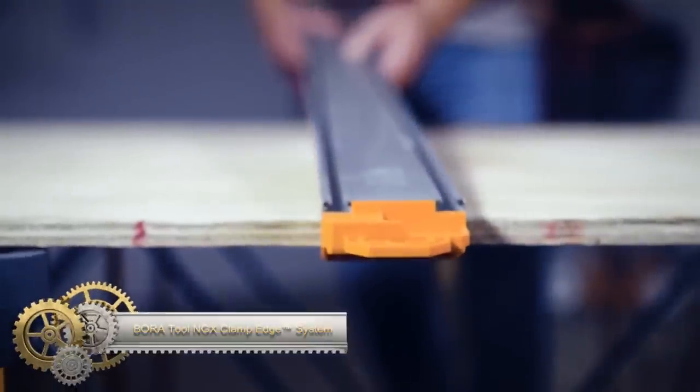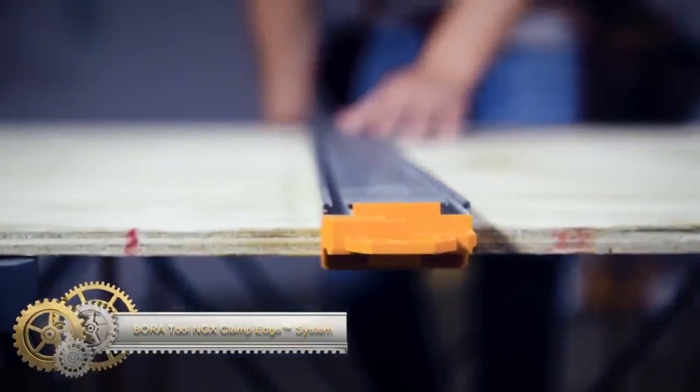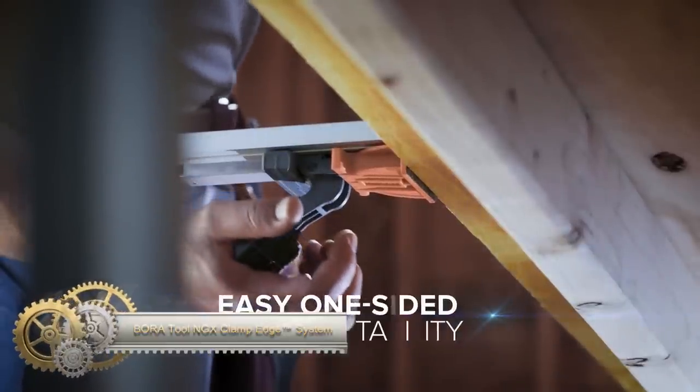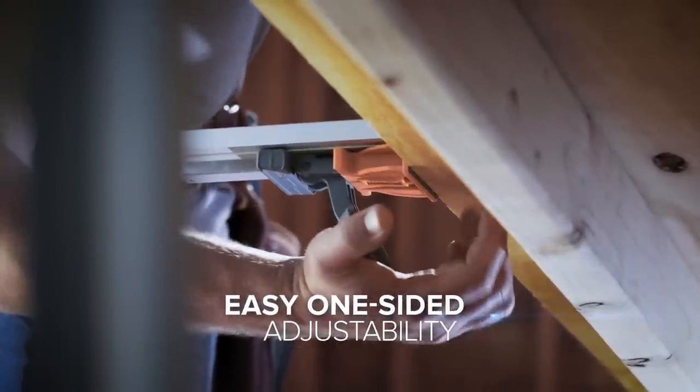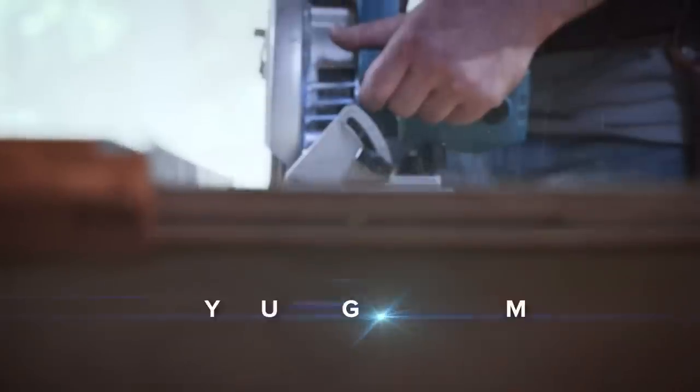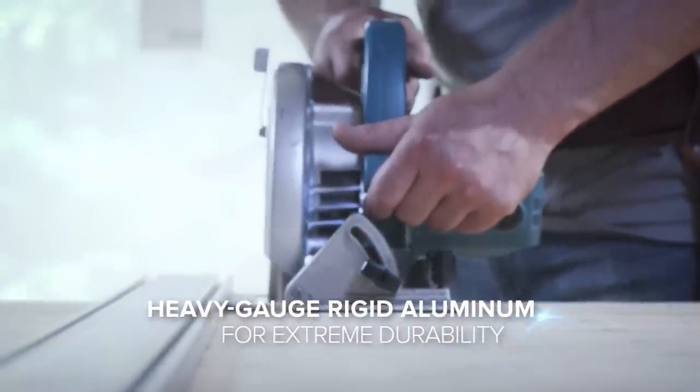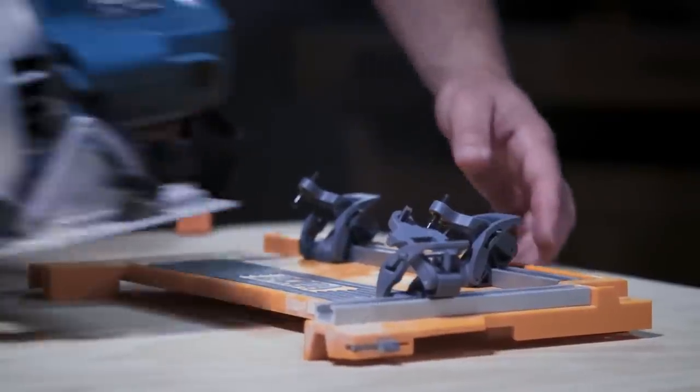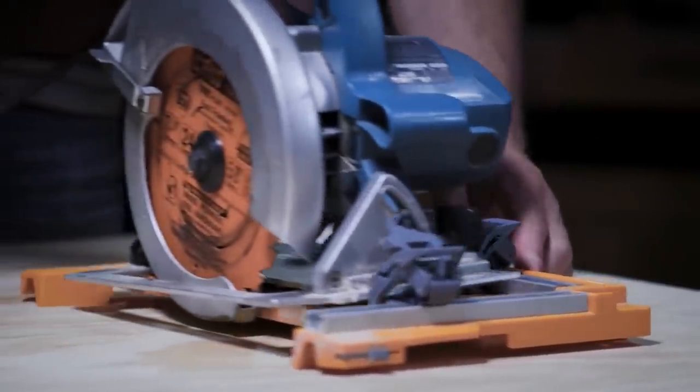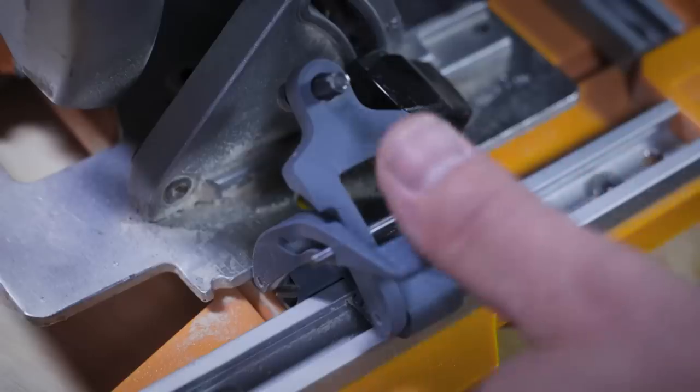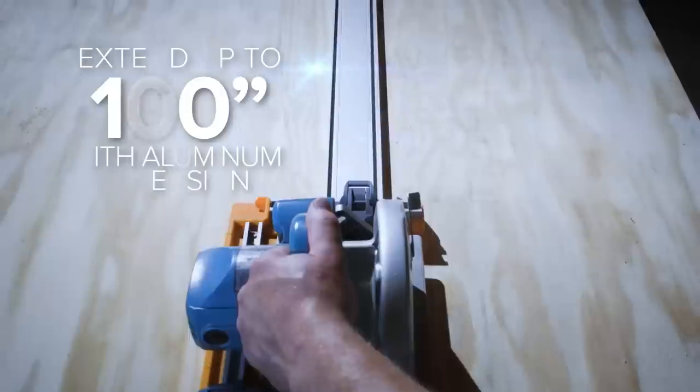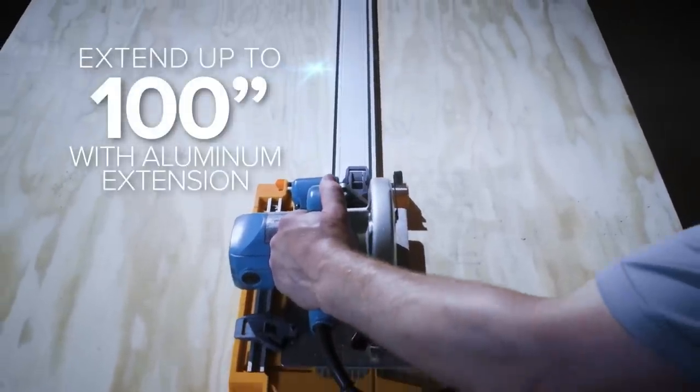The Bora Tool NGX Clamp Edge System is a versatile and accurate saw guide designed for precision cuts in sheet material and boards. It features a heavy-duty aluminum track that can be clamped to any work surface, with a locking handle for angle adjustments. The non-chip strip protects the workpiece. Compatible with circular saws, routers, and jigsaws, it is extendable for cutting large sheets.